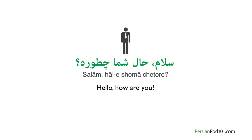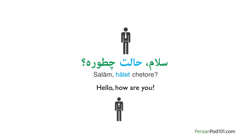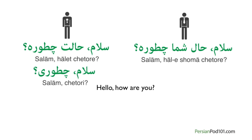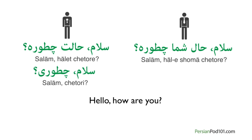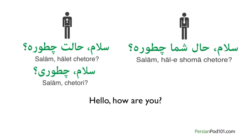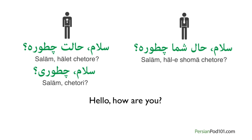If you remember the first lesson, adding 'et' to a word made it informal. Therefore, if you add 'et' to 'hal' instead of 'e,' you make the whole sentence informal. Notice that there are many ways of saying the same phrase in Persian, making it shorter or longer. But remembering the basic words will help you get through almost any conversation.